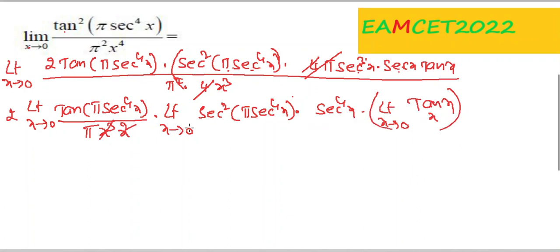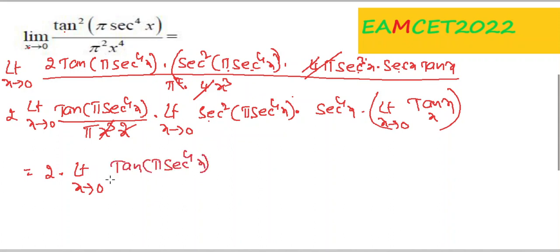As x → 0, sec x → 1 so sec⁴x → 1, and the argument π·sec⁴x → π. We still get 0/0 form again and apply differentiation once more, giving a factor of 2/π into the next limit.